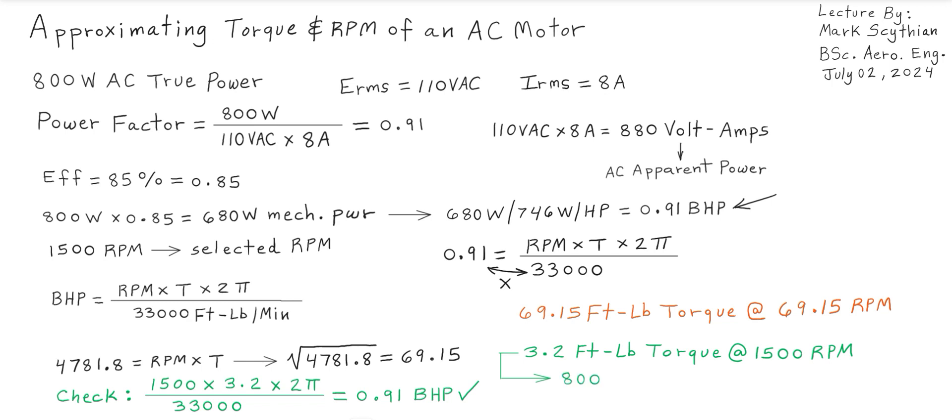So the given AC electric motor with 800 watts of AC true power input, having 85 percent electromotive efficiency, will deliver 3.2 foot-pounds of torque at 1500 RPM. Thank you for watching this video and have a great day.